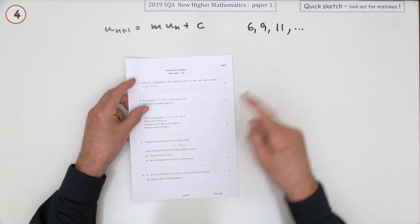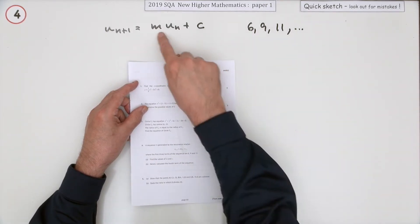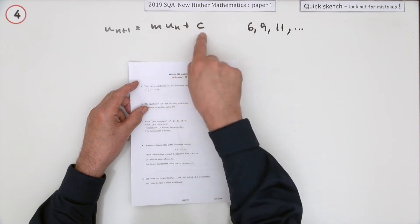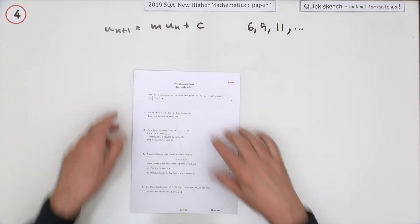So what happens here? You're given the first three terms in the sequence, and you have to find these numbers, these parameters, these characteristic constants in the recurrence relation that connects consecutive terms.